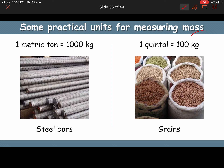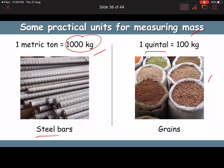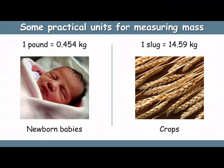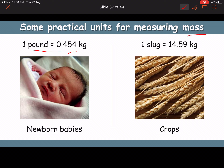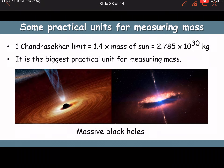Practical units for mass: one metric ton = 1000 kg, used for heavy objects like steel and vehicles. One quintal = 100 kg, used for food grains. One pound = 0.454 kg, used for newborn baby weight. One slug = 14.59 kg, used in crops.